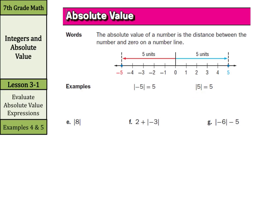So when we look at example e, the absolute value of 8, that is 8 units away from 0, so it's just 8. Now when we go to simplify expressions, we have 2 here plus the absolute value of negative 3. Well, the absolute value of negative 3 is 3, and then 2 plus 3 is 5. We're going to treat whatever is on the inside of these absolute values kind of like we do parentheses. We're going to solve for that and then worry about this part.